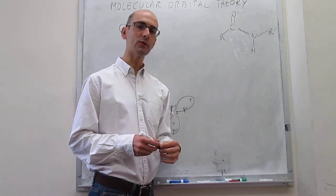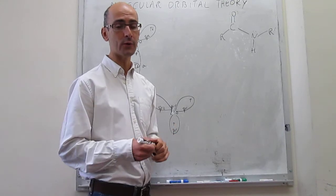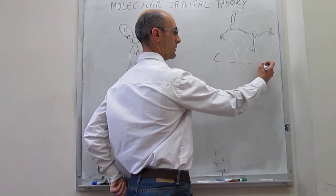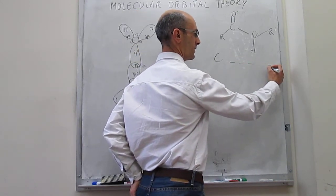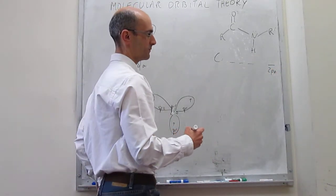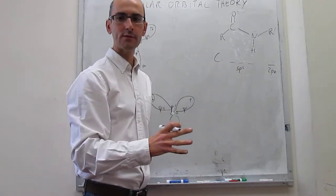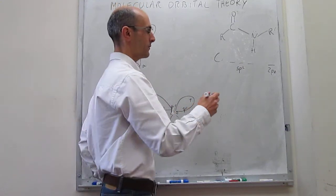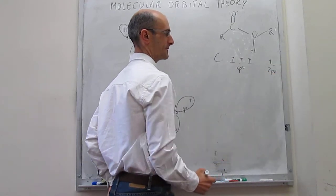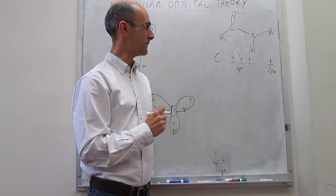With that hypothesis, we draw the hybrid electronic configurations for each atom. For carbon with sp2 hybridization, you have three sp2 orbitals and one unhybridized 2pc orbital. Carbon has four valence electrons (2s2 2p2), and those four electrons are distributed accordingly — one in each sp2 orbital and one in the 2pc.